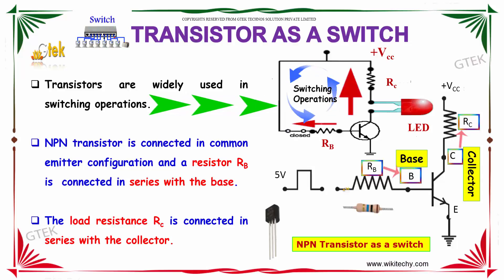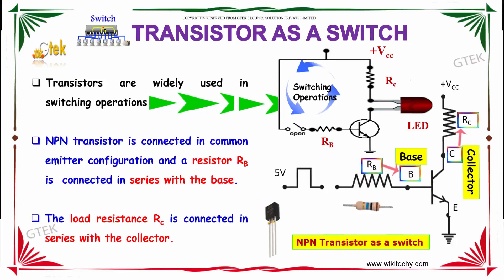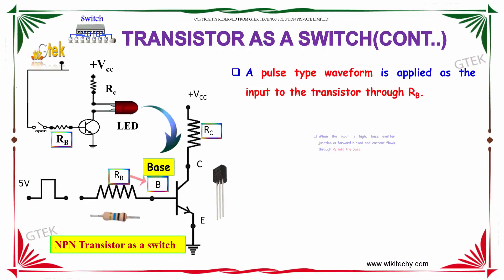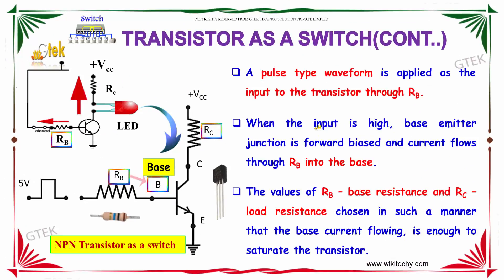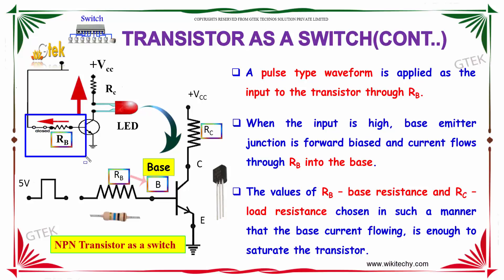Here is the NPN transistor. A pulse type waveform is applied as the input to the transistor through RB. When the input is high, the base emitter junction is forward biased. This is the base, emitter, and collector. The emitter will be having an arrow — it is emitting.